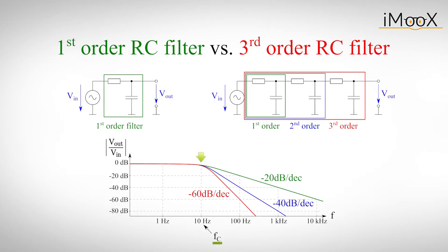You can see this in the transfer function. A first-order filter will decrease the output voltage by minus 20 dB compared to the input voltage. A second-order filter will attenuate the signal by minus 40 dB per decade. A third-order filter will lead to minus 60 dB attenuation per decade and so on.